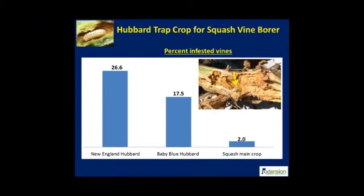In 2015, we were able to assess the attractiveness of Hubbard squash varieties to squash vine borers in replicated plots. The average infestation level is shown in the slide. About 44% of Hubbard vines were infested with squash vine borer larvae, indicated by the yellow arrow in the picture.